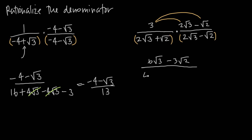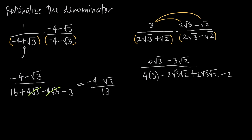Multiplying the first terms: 2 root 3 times 2 root 3 gives us 4 when we multiply 2 by 2, and root 3 times root 3 is just 3, so we get 4 times 3. Then 2 root 3 times negative root 2 is minus 2 root 3 root 2. Then the inner terms, square root of 2 times 2 root 3, gives us plus 2 root 3 root 2. And then our last terms, root 2 and negative root 2, give us minus 2. Again, just like before, we have a negative 2 root 3 root 2 and a positive 2 root 3 root 2 — those two will cancel.